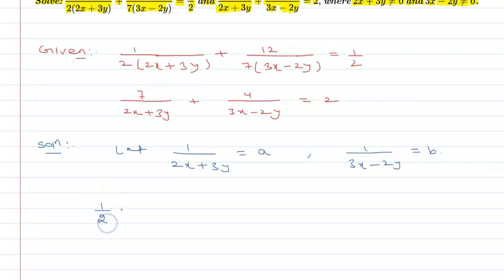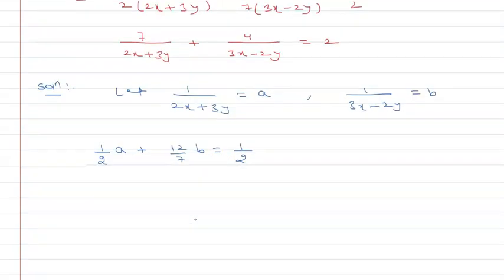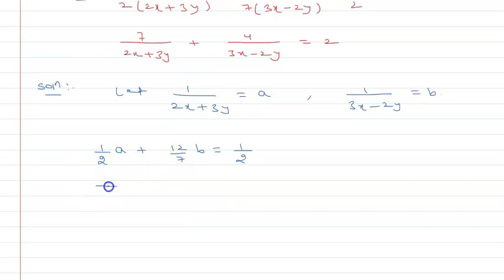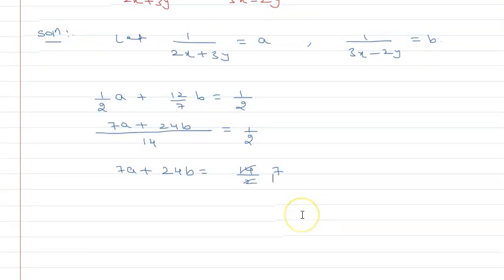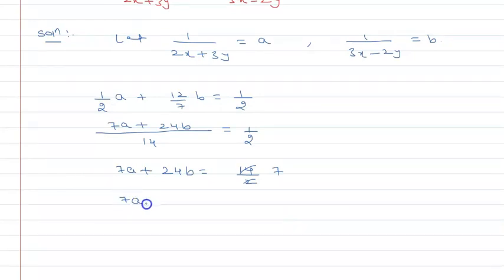Substituting into the first equation: 1 upon 2 times a plus 12 upon 7 times b equals 1 upon 2. Using LCM of 7 and 2, which is 14, and simplifying, we get 7a + 24b = 7.